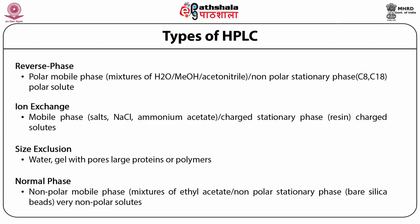HPLC contains two fundamental things: one is the mobile phase and another is the stationary phase. The stationary phase is the column, and the mobile phase is the solvent used to elute the molecule. Based upon the application, for convenience, we classify them in different ways.